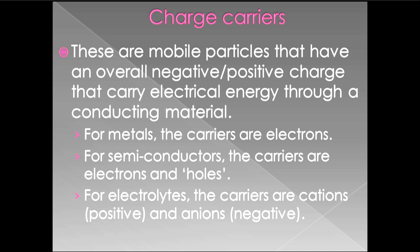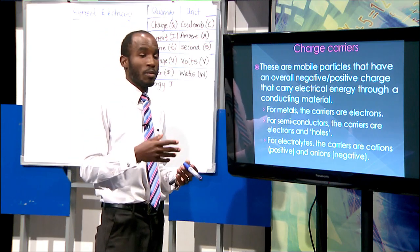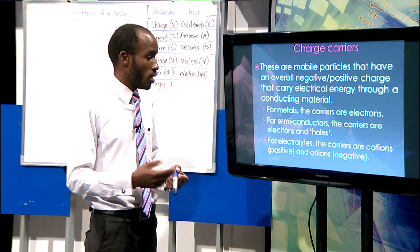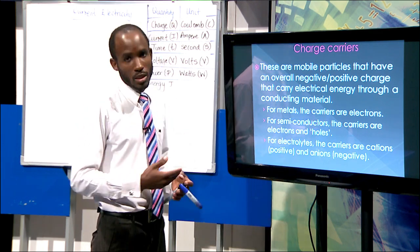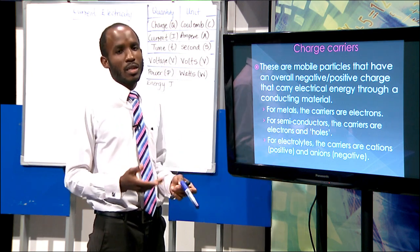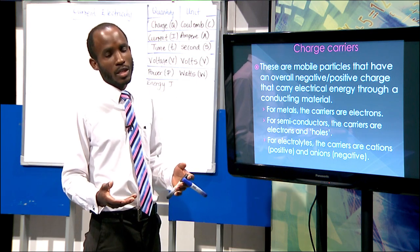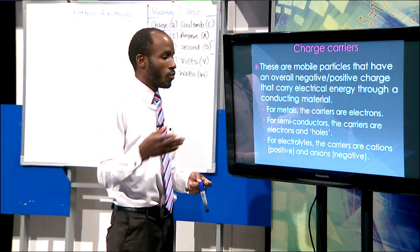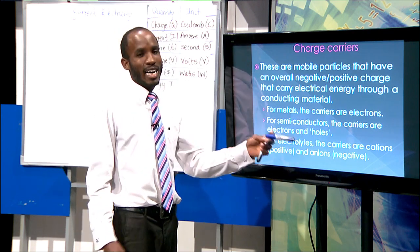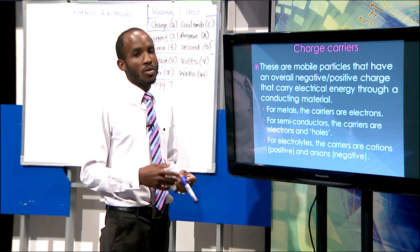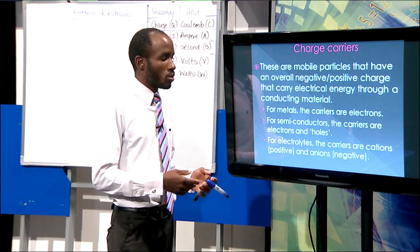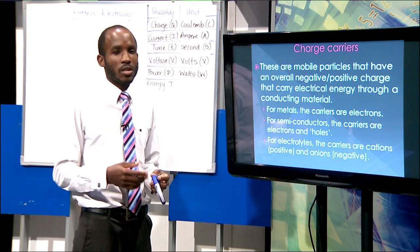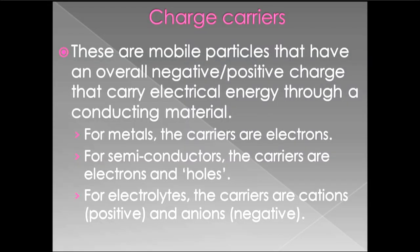For electrolytes — familiar to chemistry students — these are conducting liquids that allow current to flow through them, and by themselves can actually generate a current. They conduct by way of ions. Ions are basically charged particles: if you add an electron to an atom it becomes overall negatively charged — an anion; if you remove an electron it becomes overall positively charged — a cation. Metals use electrons, semiconductors use electrons and holes, electrolytes use cations and anions.